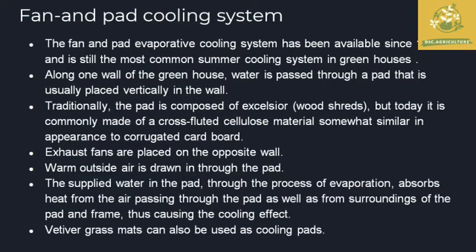The fan and pad evaporative cooling system has been available since 1954 and is one of the most common cooling systems in greenhouses. In the design, along one wall of the greenhouse, water is posted through pads which are usually placed vertically in the walls, so when air circulates from the fan the heat is reduced. Traditionally the pad was composed of excelsior — wood shavings — but today it is commonly made of cross-fluted cellulose material, similar in appearance to corrugated cardboard.